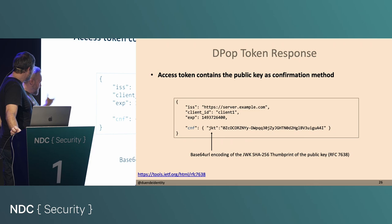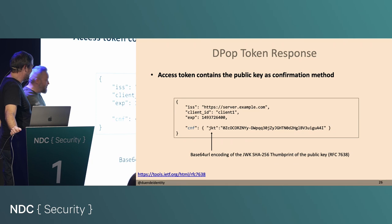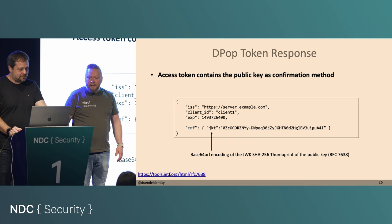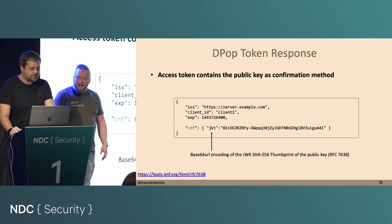Here you see an example of what the access token looks like when generated. The CNF claim contains the JKT — it's the Base64 URL encoding of the JWK SHA-256 thumbprint of the public key. It's the same CNF claim as in mutual TLS, just for DPoP. It's a simple addition.